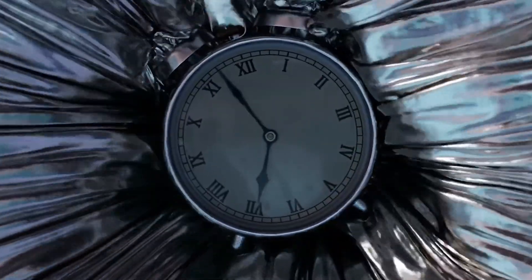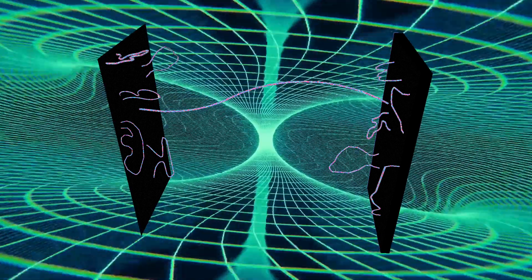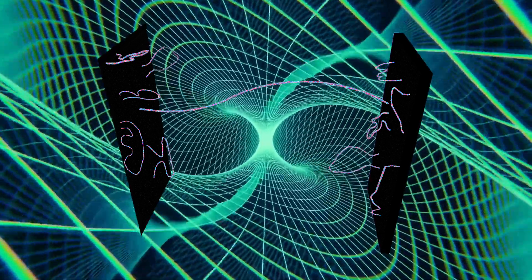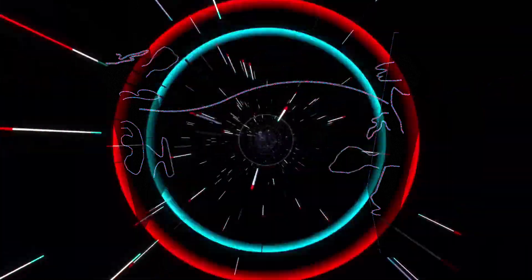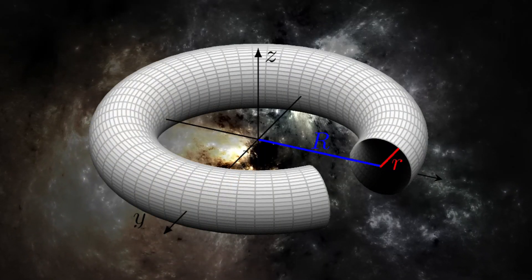But the string theory suggests something else. The string theory says that if you magnify the particles known as quarks, you will find a little tiny filament of energy, a little string that vibrates. Simply explained, the conventional ideal says there is nothing in the quark, but string theory says that there is something in quark: a vibrating string.